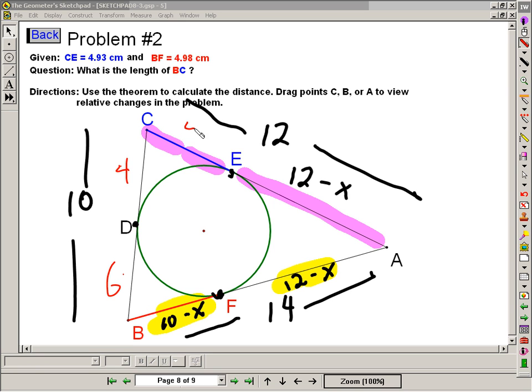If this much is 4, then this much must be 12 minus the 4, which is 8. If that's 8, then so is this. If that's 6, then so is this. And that happens to add up to 14. Must have done it correctly.